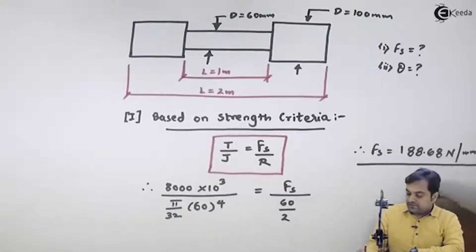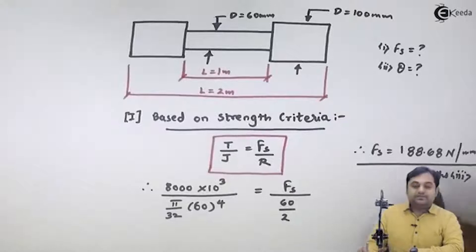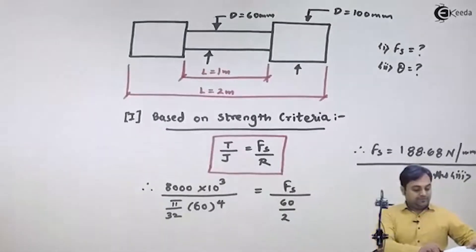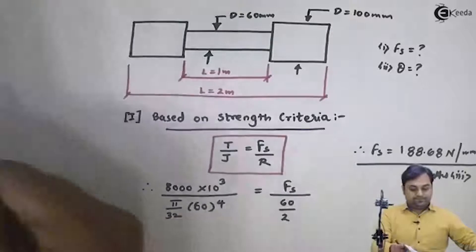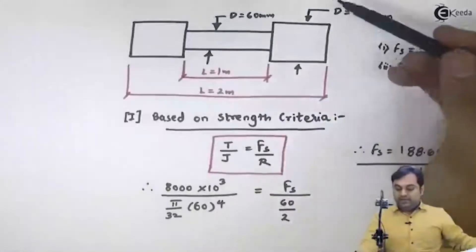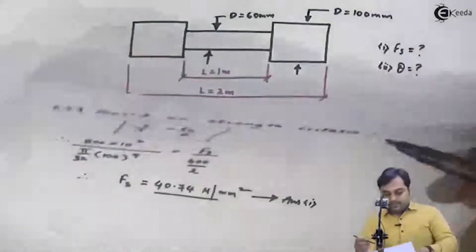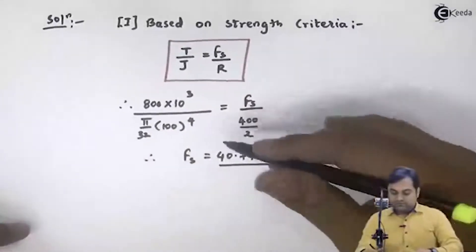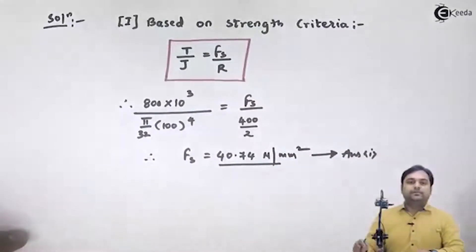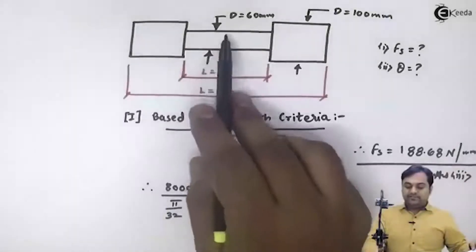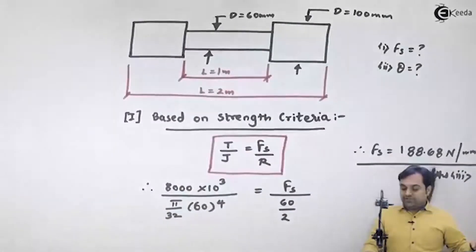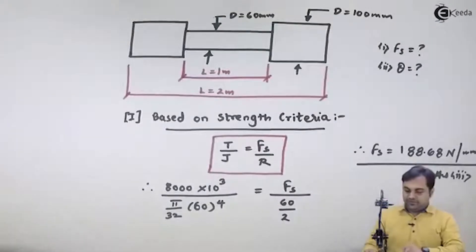That is the third answer. As is clearly seen, when the diameter was 100 mm the shear stress was 40.74 N/mm², but since the diameter is now reduced, the shear stress increases to 188.68 N/mm².